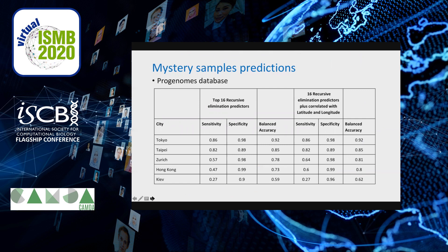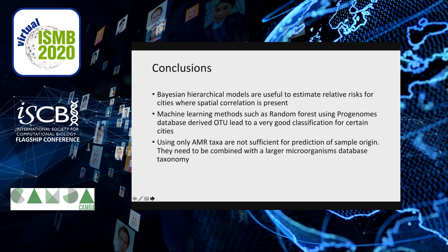The last part is the mystery sample predictions based on data from the ProGenome database. The analysis is split into two parts: top 16 recursive elimination predictors, and 16 recursive elimination predictors plus correlated latitude and longitude. The accuracies are very similar for both types of analysis. Some results are adjusted for sample size, and some differences may be due to data balancing and batch removal — probably a matter of future work.